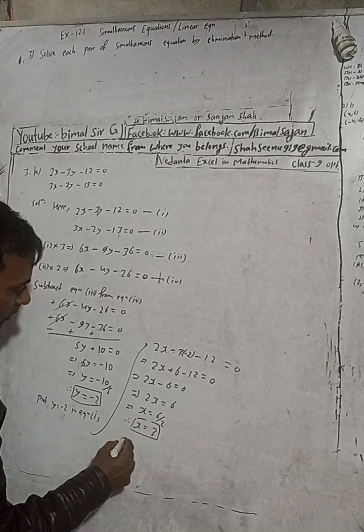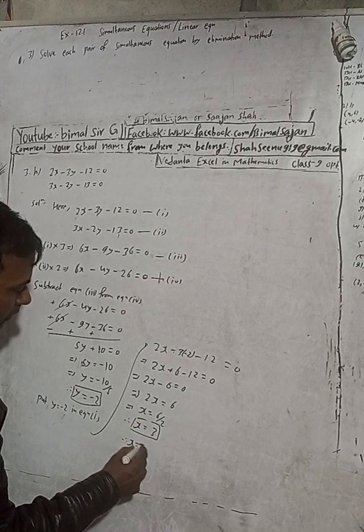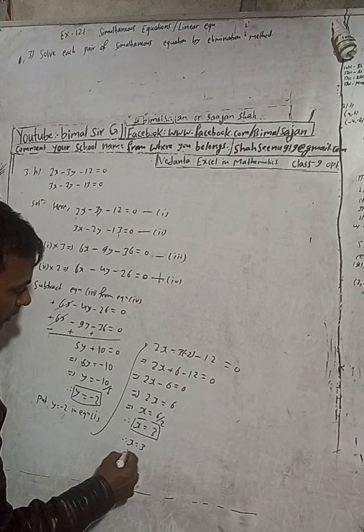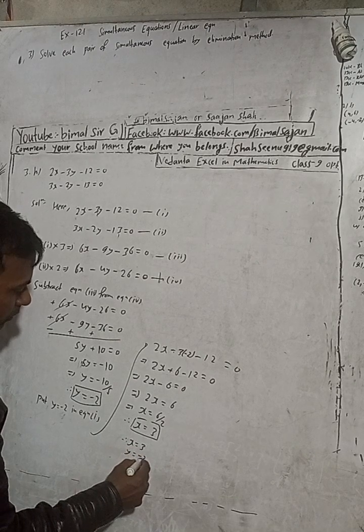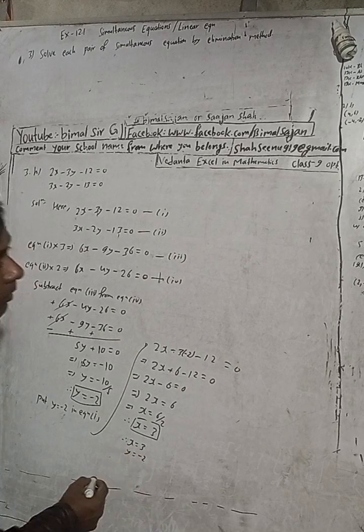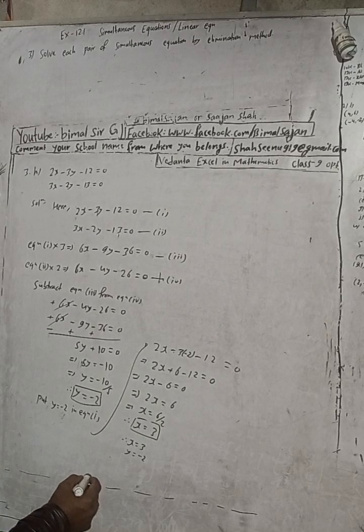Therefore our answer is x is equal to 3 and y is equal to minus 2, written as the ordered pair (3, minus 2). Let's verify this is correct.